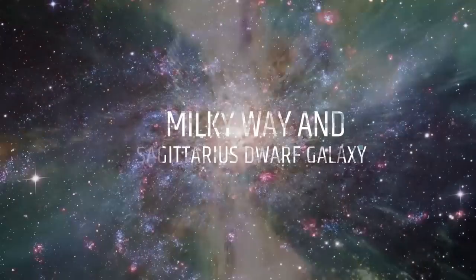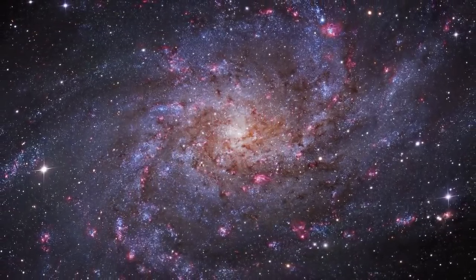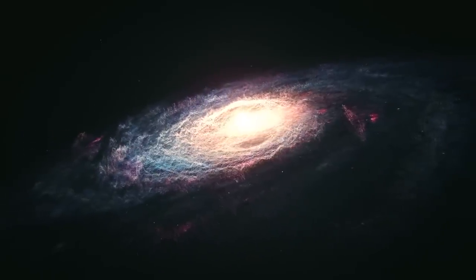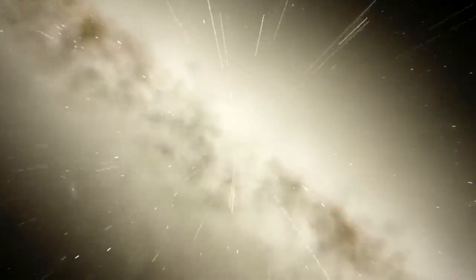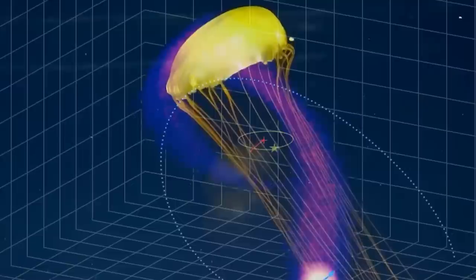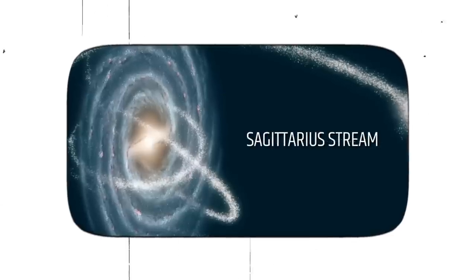The Milky Way and the Sagittarius Dwarf Galaxy. The Milky Way, our home galaxy, is currently undergoing a process of accretion as it absorbs the Sagittarius Dwarf Galaxy. The Sagittarius Galaxy is being torn apart by the gravitational forces of the Milky Way and has left behind a trail of stars known as the Sagittarius Stream.